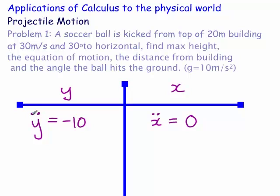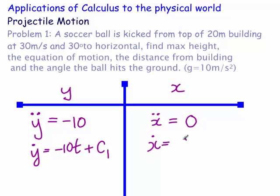Now we step back one, or integrate. So we get that y-dot equals minus 10t plus a constant c1, and x-dot equals just a constant c2. To work out these constants, we need to look at the vector diagram and find the x and y components of the initial velocity.